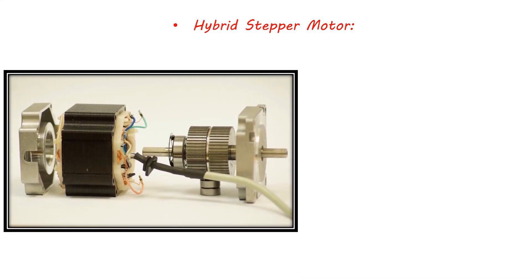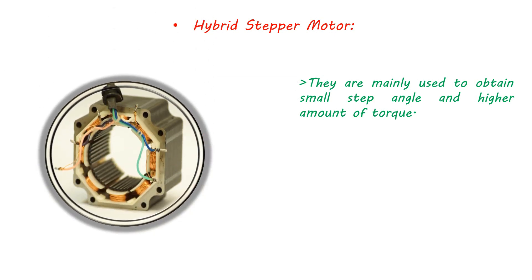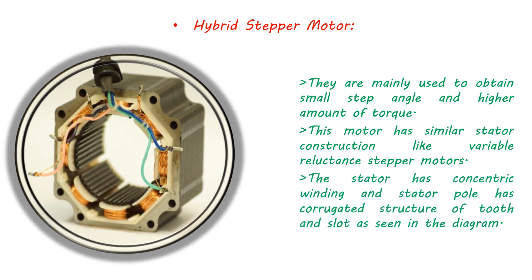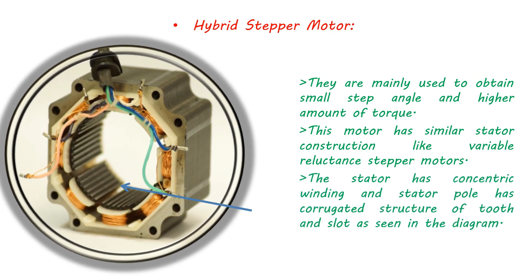The hybrid stepper motor is the most commonly used motor among the various types of stepper motors. They are mainly used to obtain small step angle and higher amount of torque. This motor has similar stator construction like variable reluctance stepper motors. The stator has concentric winding and the stator pole has a corrugated structure of tooth and slot as seen in the diagram.